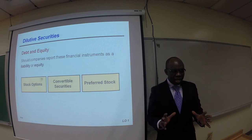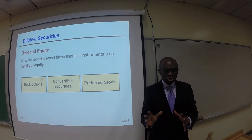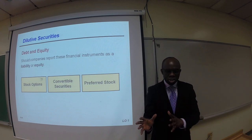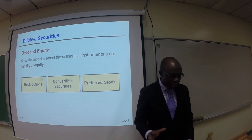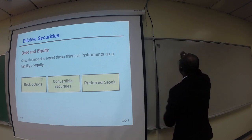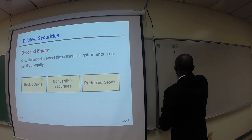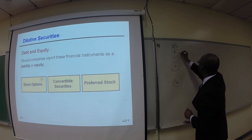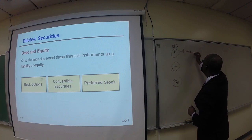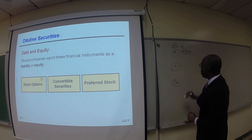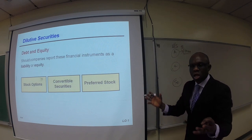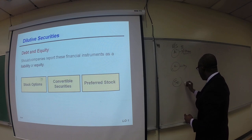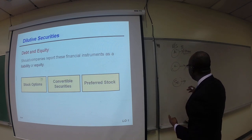Dilutive securities could be a debt financial security or an equity financial security. To understand what that means, let's take a look at the balance sheet. On the balance sheet we have assets, liabilities, and equity. If a company has $100 million in total assets, that $100 million comes from two sources.